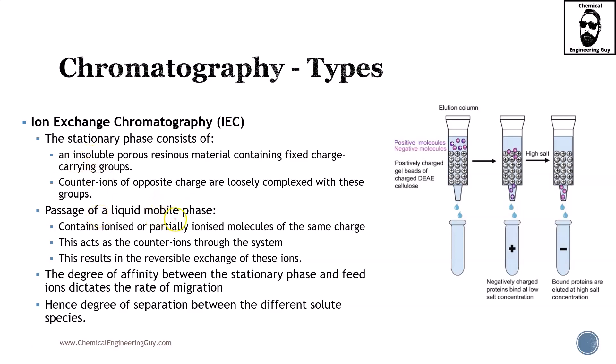Passage of liquid mobile phase in the column contains ionized or partially ionized molecules of the same charge. These act as the counter-ions through the system. Let me finish with these little points and we're going to see how this works in this graph. This results in the reversible exchange of these ions. So you have one exchange for another exchange.